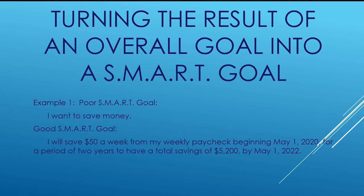Example one — poor SMART goal: 'I want to save money.' A good SMART goal is: 'I will save $50 a week from my weekly paycheck beginning May 1, 2020, for a period of two years, to have a total savings of $5,200 by May 1, 2022.' This is a SMART goal. It tells you how much you're going to save, how often, where the money is coming from, how long you're going to save it, what your result will be, and the date you'll achieve that result.